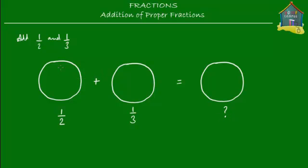Let's mark half on the first pizza. This means that if we slice the pizza into two slices, then one of those slices is equal to half of the pizza. So we cut this pizza into two slices, and this yellow portion is equal to half the pizza.